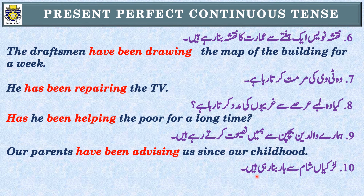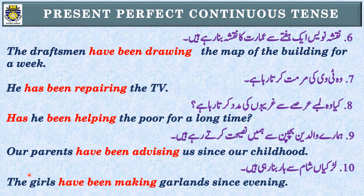Sentence 10: 'لڑکیاں شام سے ہار بنا رہی ہیں۔' Identification: 'رہی ہیں' اور 'شام سے' یعنی point of time — Present Perfect Continuous Tense۔ Subject: 'لڑکیاں' یعنی girls — plural noun — have been۔ The girls have been making garlands since evening.